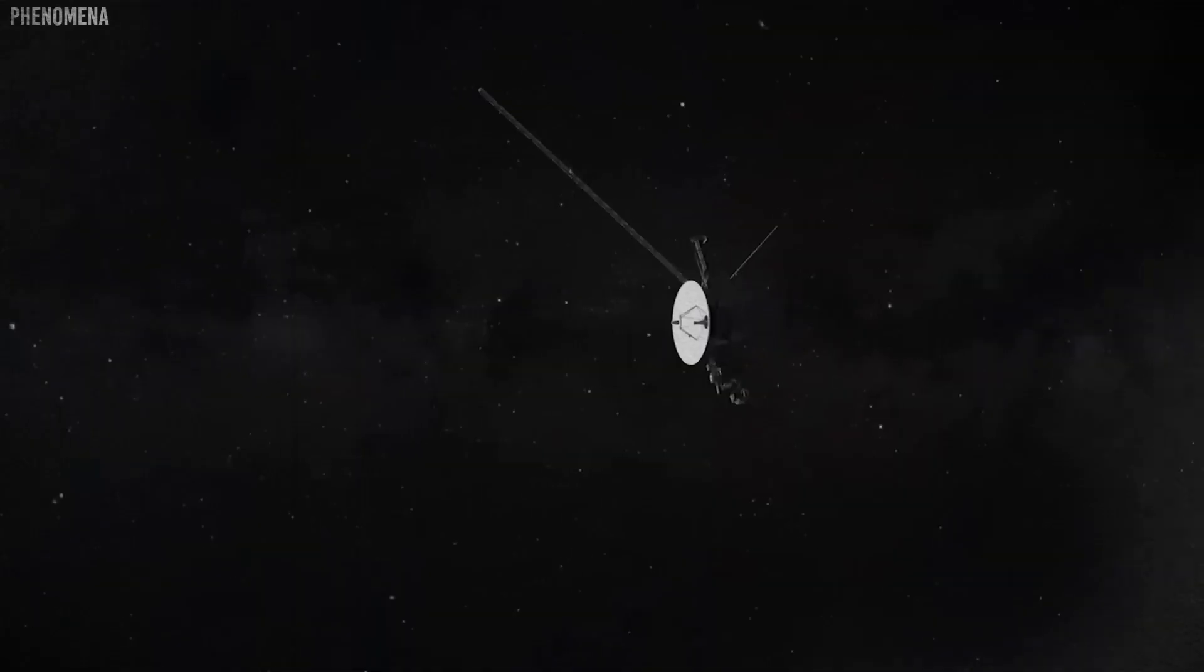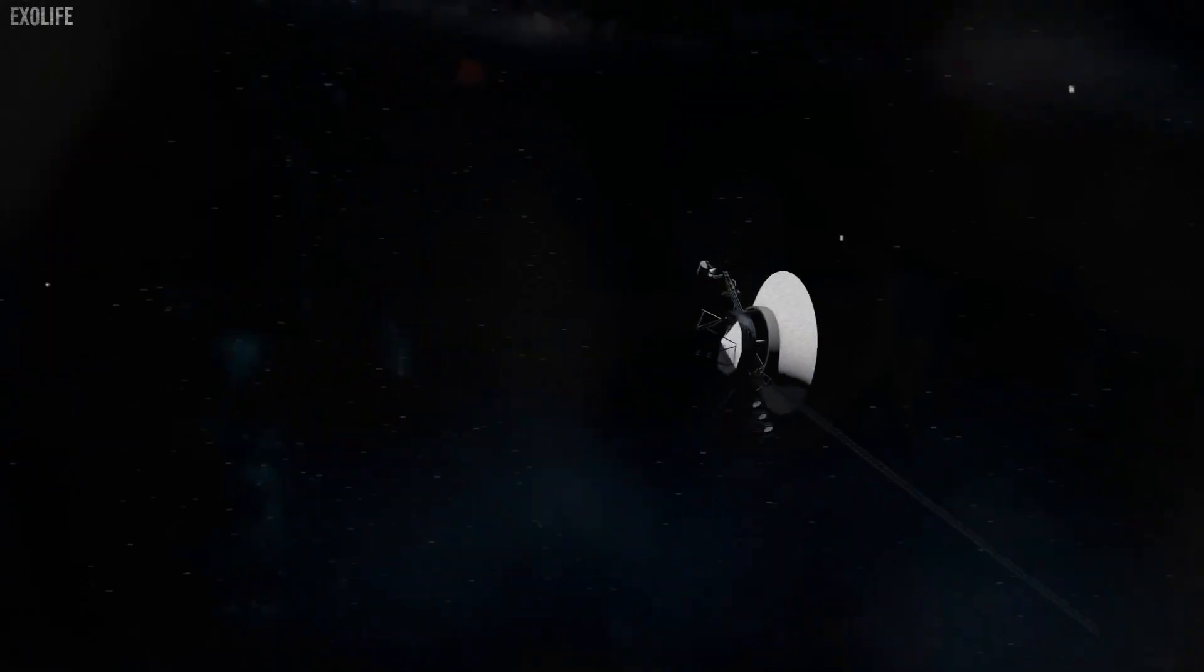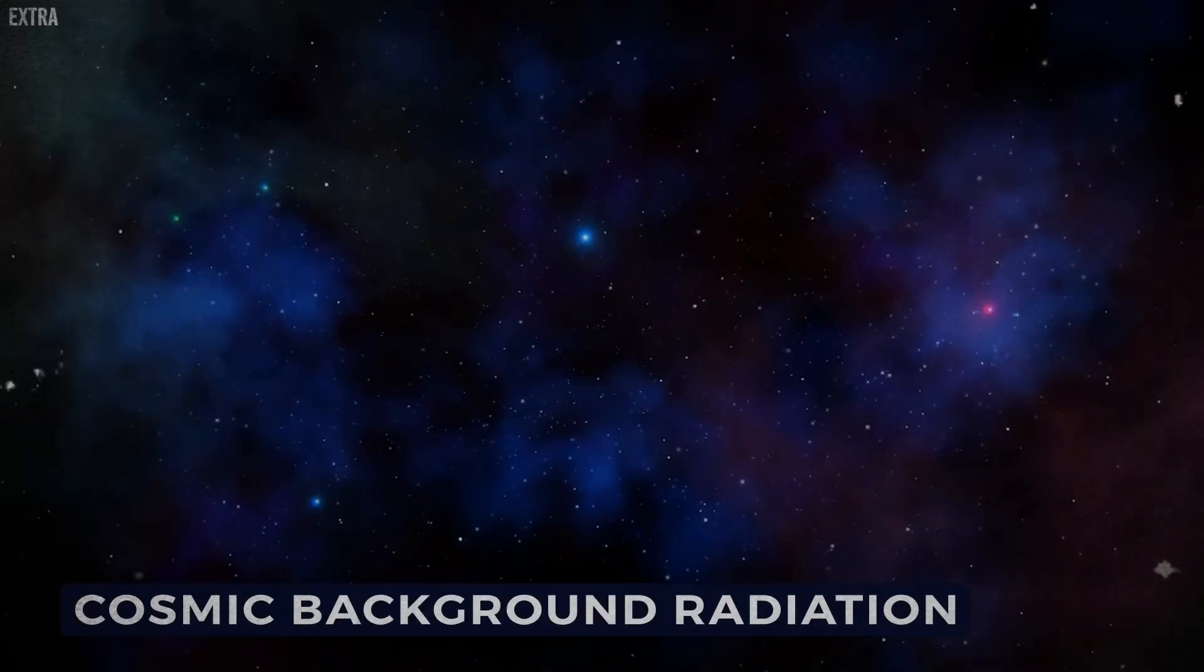Voyager 1, launched in 1977, is the most distant spacecraft ever sent from Earth. It is moving away from us at a speed of about 38,000 mph, or roughly 11 miles per second.